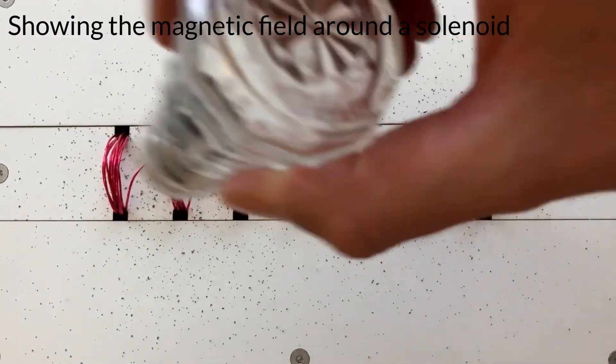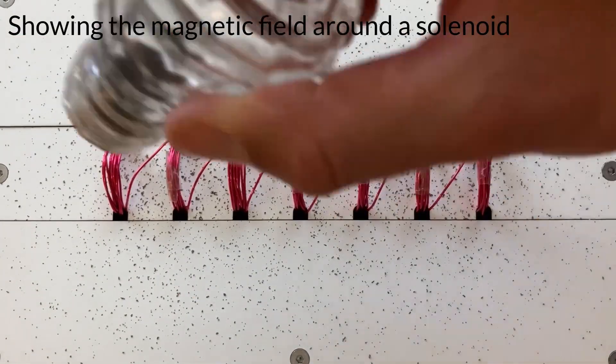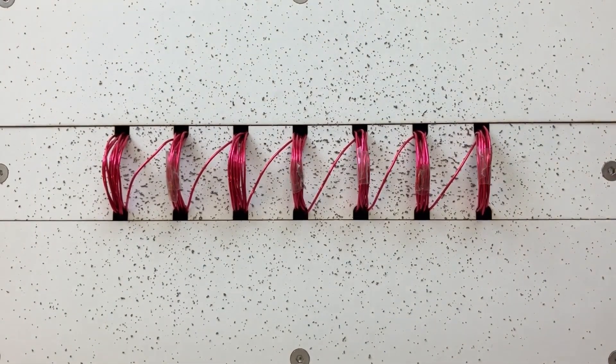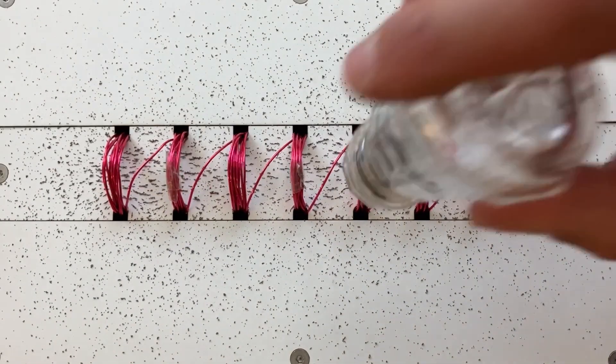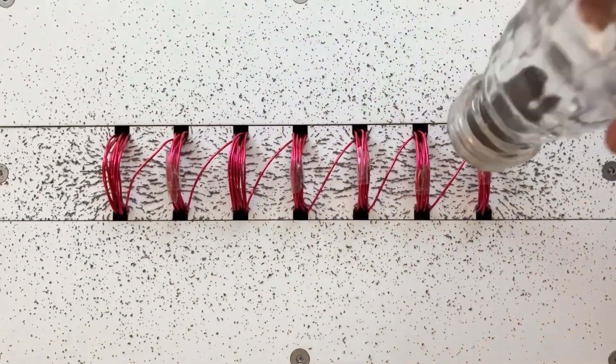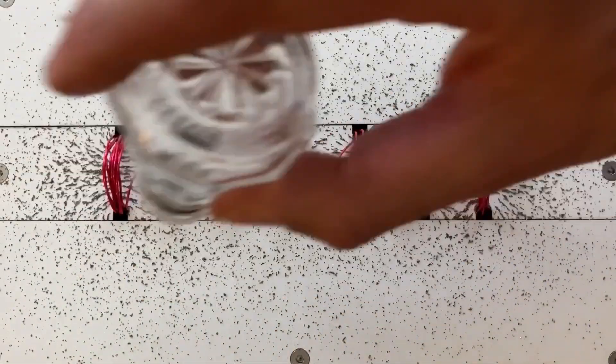To show the magnetic field around a solenoid, let's put on some iron filings, turn on the current and you can see them start to move. Let's add more iron filings and fairly quickly you can see the magnetic field lines going through the middle of the coil.